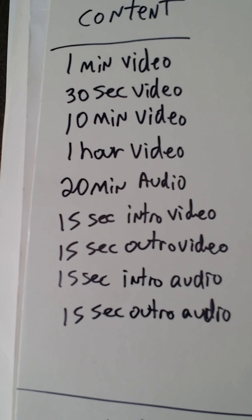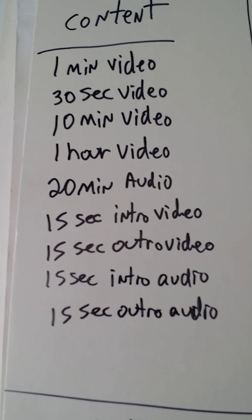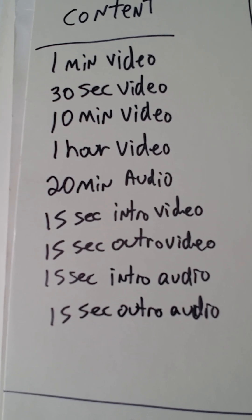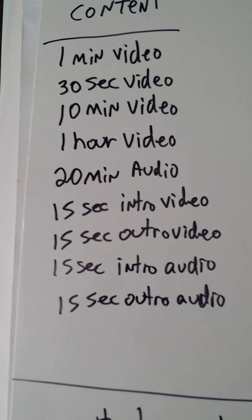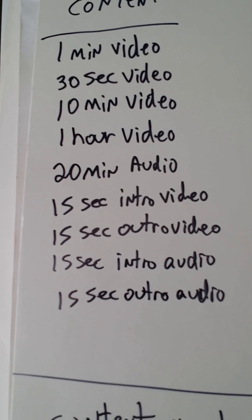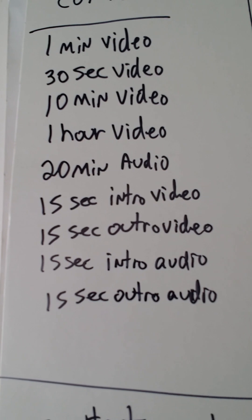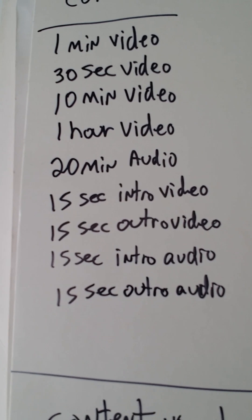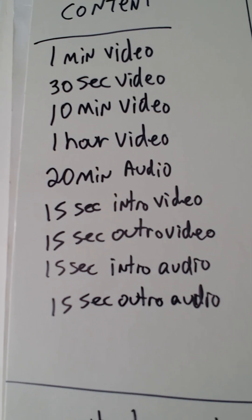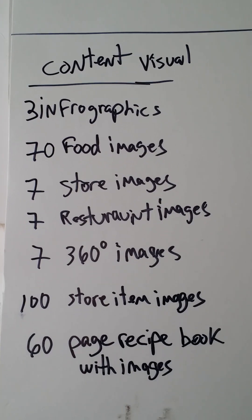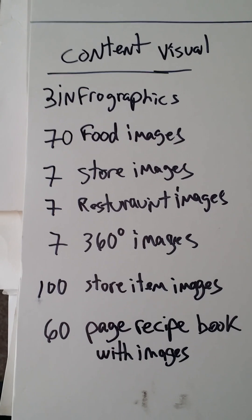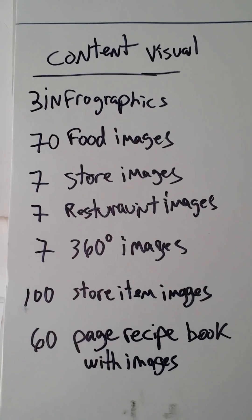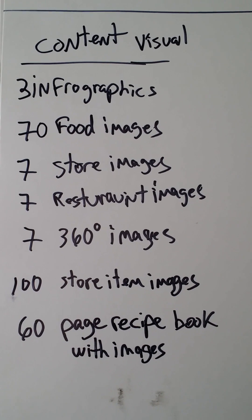Here's the idea: you have one minute video, a 30-second video, a 10-minute video, a one-hour video, a 20-minute audio, a 15-second intro video, a 15-second outro video, a 15-second intro audio, and a 15-second outro audio for your content — your visuals, pictures, and all that stuff. For example, I created this for a restaurant.